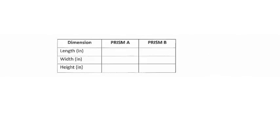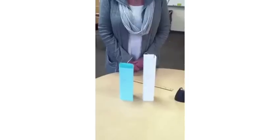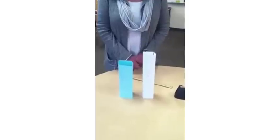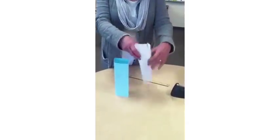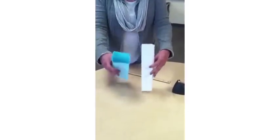Now at this time take a look at your table. And you need to make sure that you have labeled the dimensions for prism A and the dimensions for prism B. We have two prisms here. One is tall. One is shorter. One is skinny. One is a little bit wider.